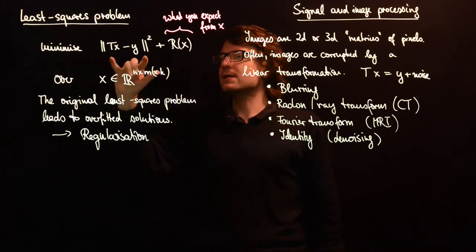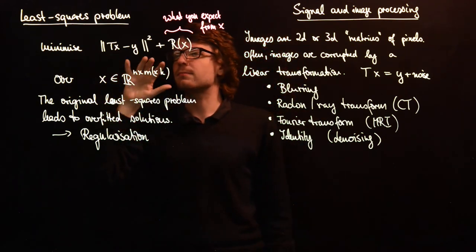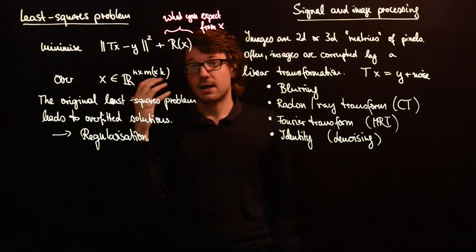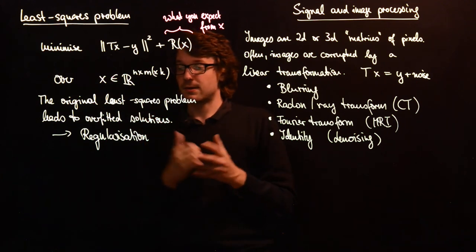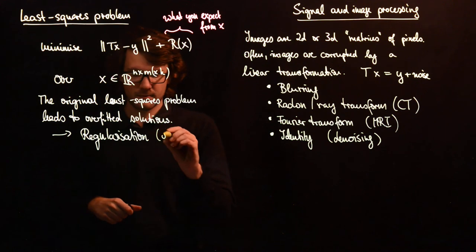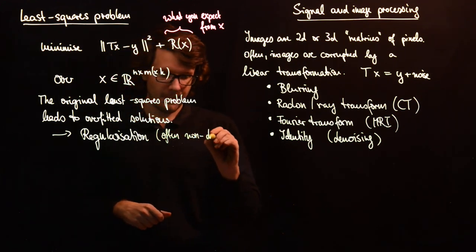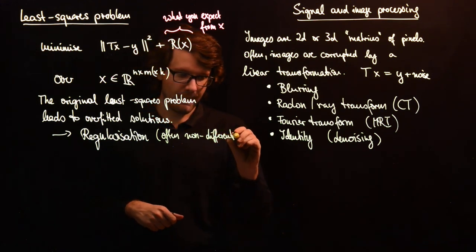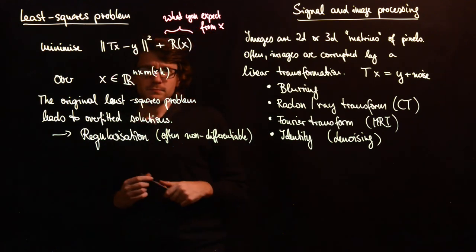If you do want to promote sparsity then you take some l1 functional. So you don't take a smooth norm squared l2 norm squared functional, but instead you take an l1 norm. So you take the sum of some absolute values and this one often has non-smooth, non-differentiable components.